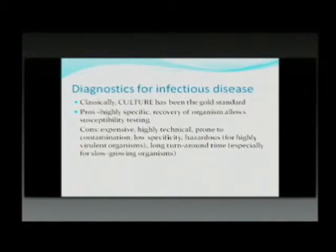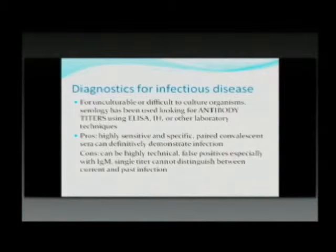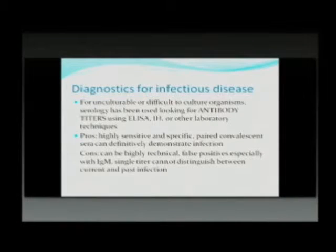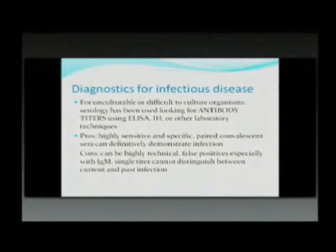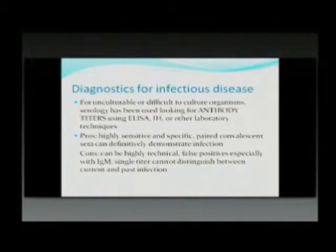For unculturable or difficult-to-culture organisms, traditionally we've looked at antibody titers using either ELISA, indirect agglutination, or other laboratory techniques. These have been highly sensitive and specific and fairly successful, but they typically require paired convalescent sera — where you actually demonstrate an increase in titers — to definitively demonstrate infection, and it can still be highly technical, requiring a laboratory to perform.